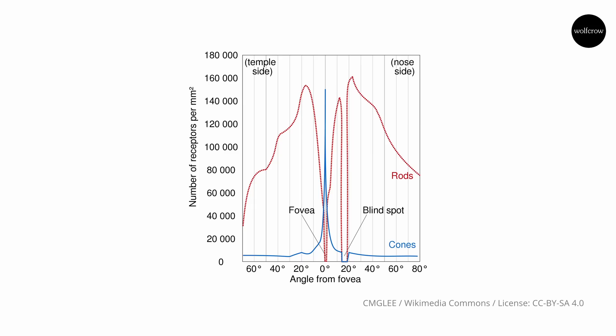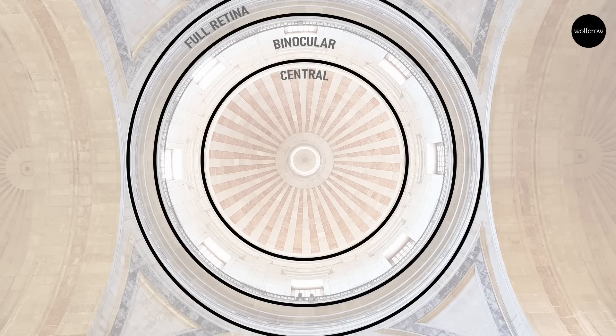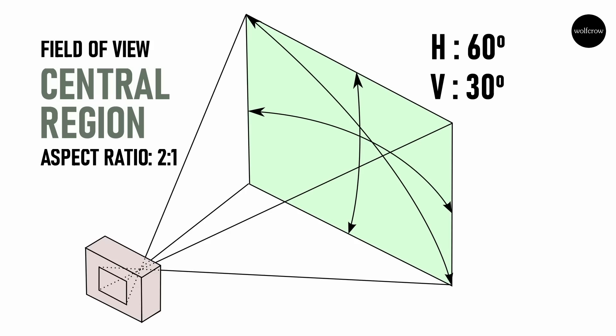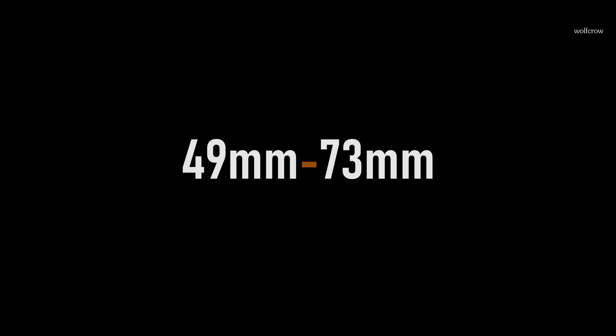The rods and cones in our retina drop off at about two points: one at about 120 degrees (the binocular vision range), and another at about 60 degrees — the central region, also called the near peripheral region. This is where the maximum cone activity takes place. Sharpness, color, and most critical functions of the eye during normal lighting conditions are carried out in this zone. If we consider this range, the sensor size is 12x6mm — awfully close to Super 16. The focal length considering this region is about 49–73mm, and to me this is the range that best represents my eye and how I see the world.